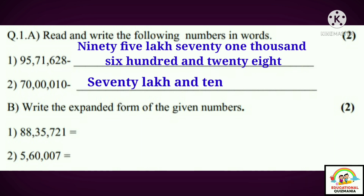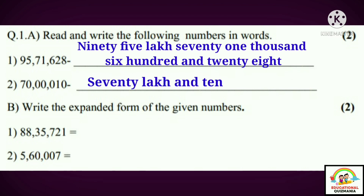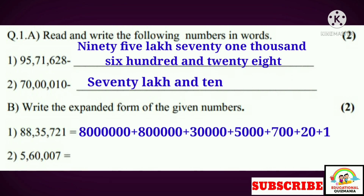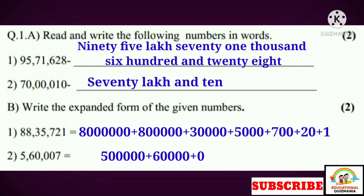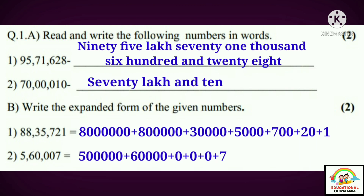Part B: Write the expanded form of the given numbers. One: eighty-eight lakh thirty-five thousand seven hundred and twenty-one. The expanded form is: eighty lakh plus eight lakh plus thirty thousand plus five thousand plus seven hundred plus twenty plus one. Two: five lakh sixty thousand and seven. The expanded form is: five lakh plus sixty thousand plus zero plus zero plus zero plus seven.